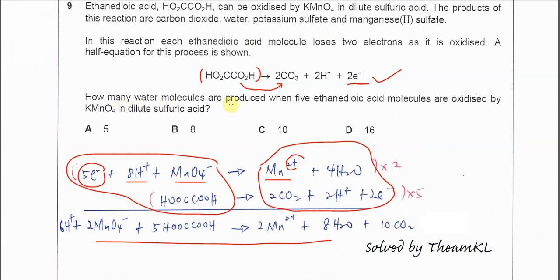So the question asked how many water molecules are produced when 5 ethanedioic acid are oxidized. 5 acid oxidized, water that form is 8. Therefore answer is B.